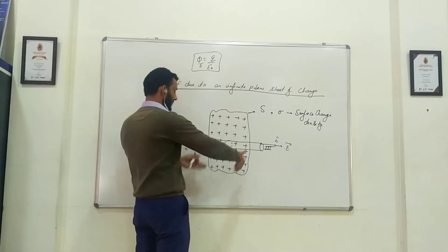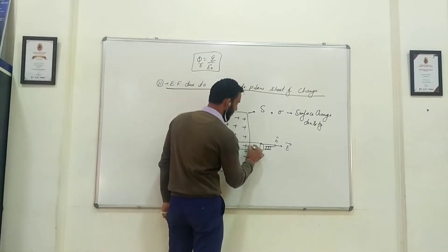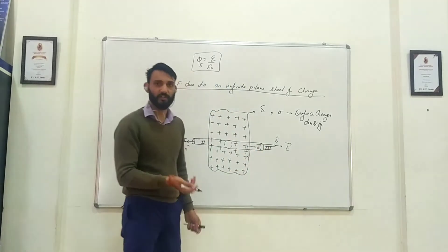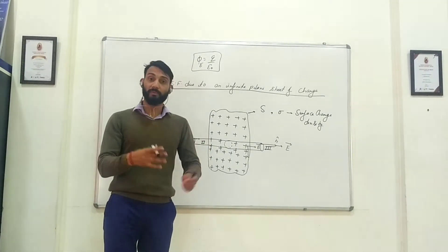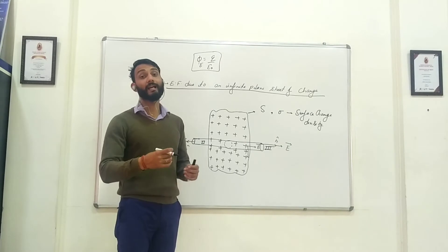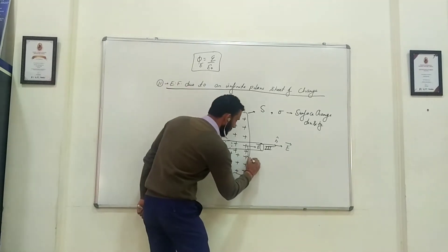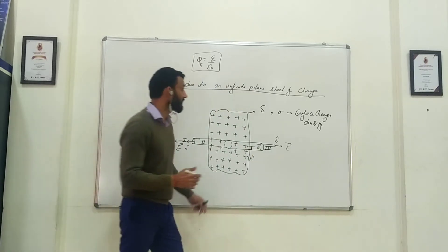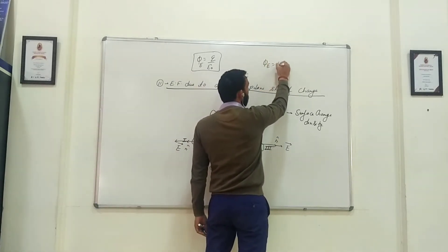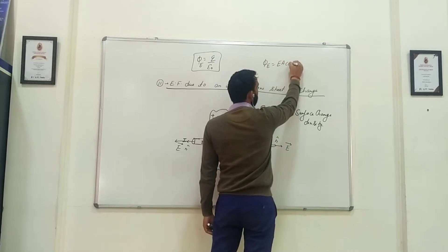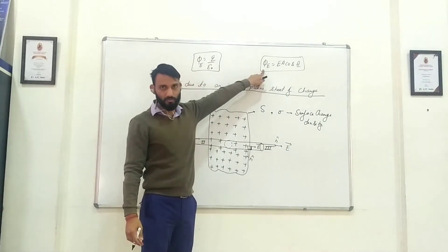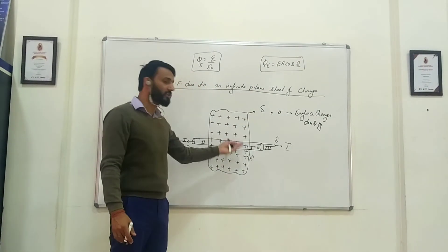Now for the curved cylindrical surface: the electric field is outward for a positive charge, but the area vector will be perpendicular to the surface — in the upward or downward direction depending on which part you take. So the angle between the electric field and the area vector here is 90 degrees. Since electric flux equals EA cos theta, and theta is 90, the electric flux through the curved surface will be zero.